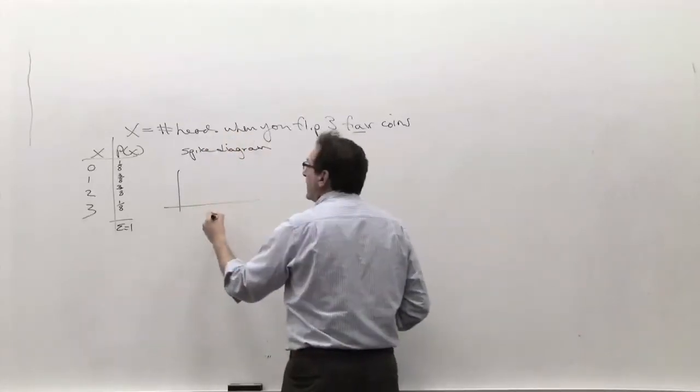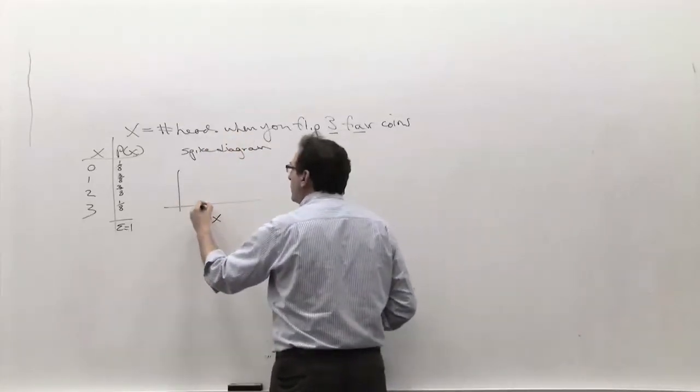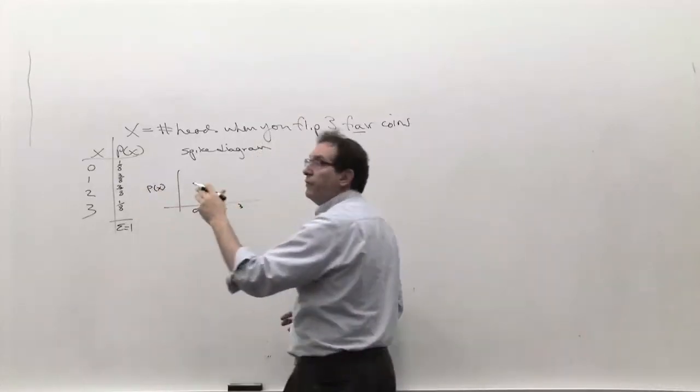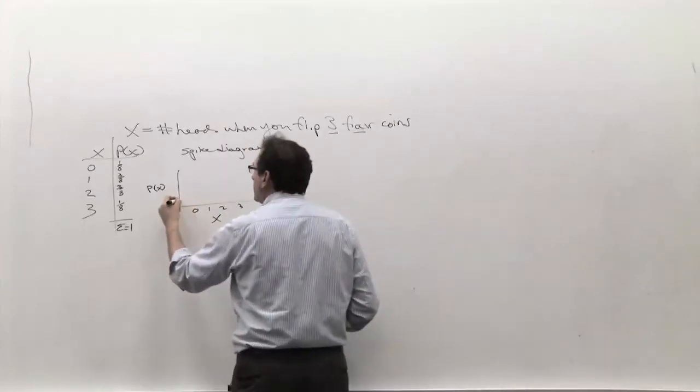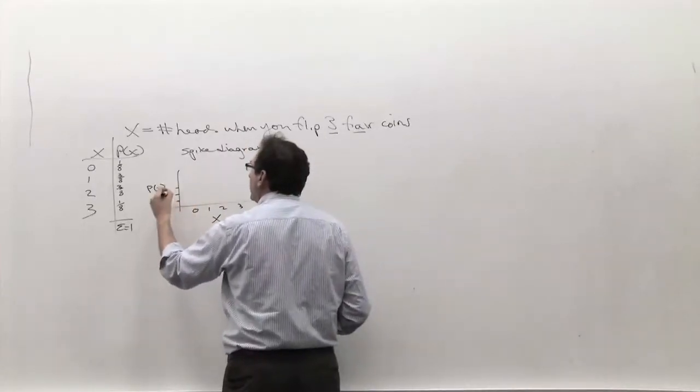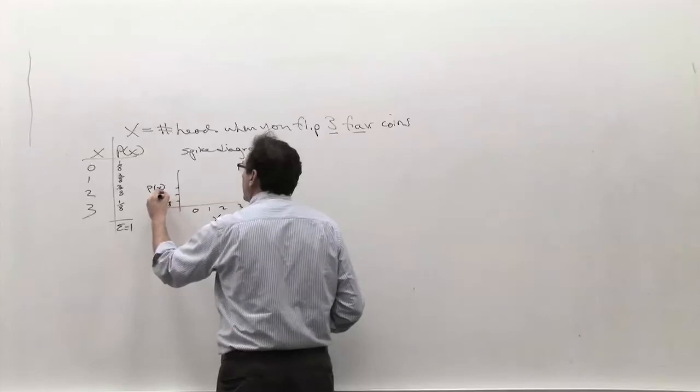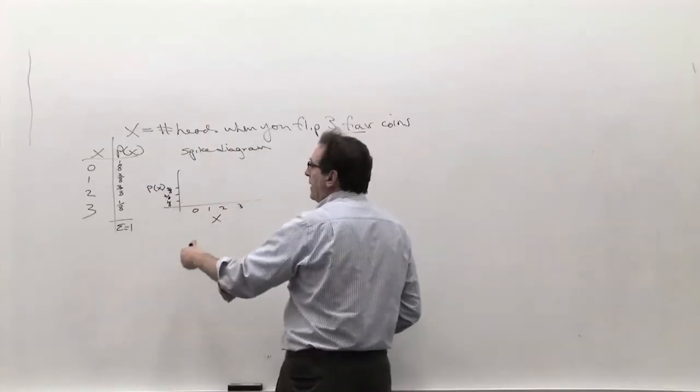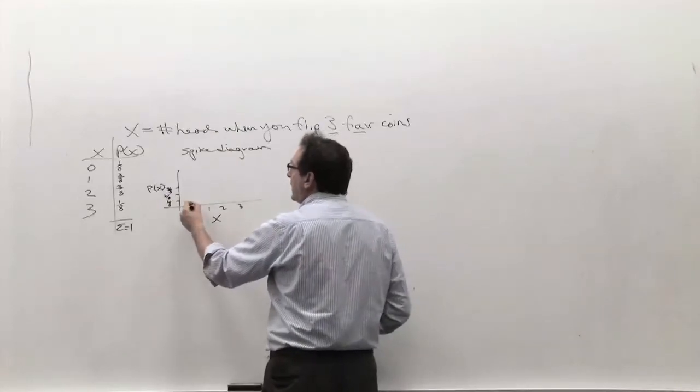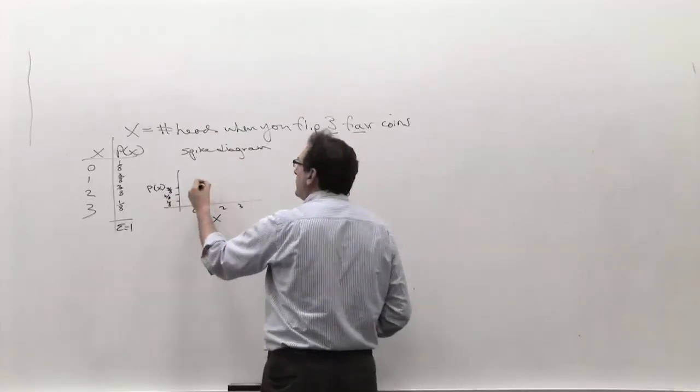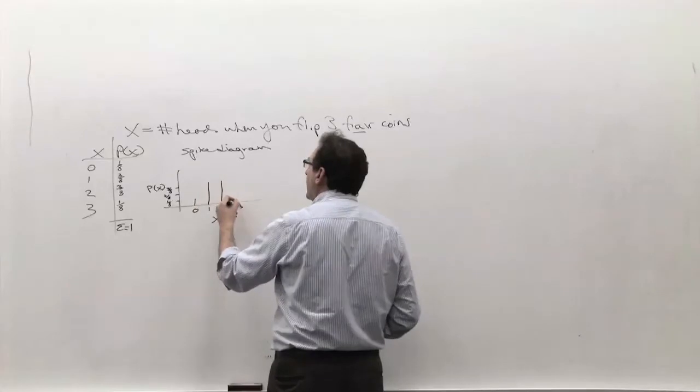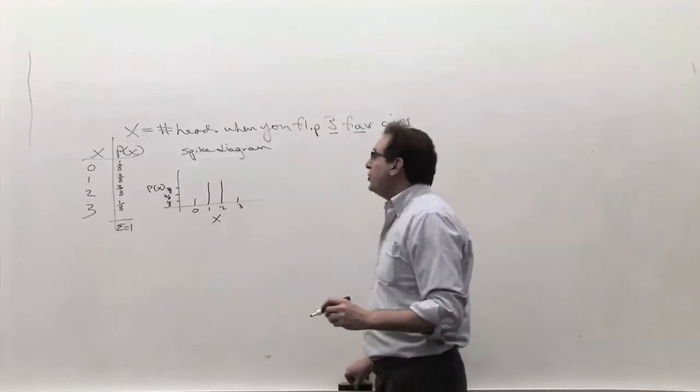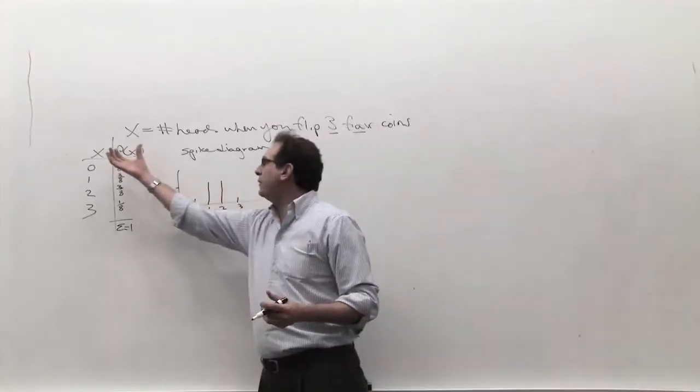Basically, along the x-axis, you put the x numbers: 0, 1, 2, 3. Along the y-axis, you put the probabilities, one out of eight, two out of eight, three out of eight. And basically, you erect the spike representing the probability of getting exactly x equals zero, x equals one is three out of eight, x equals two is three out of eight, x equals three is something like that.